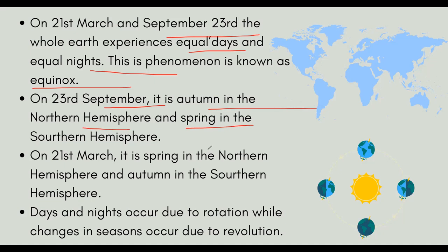If it is summer in the northern hemisphere, it will be winter in the southern hemisphere. If it is spring in the northern hemisphere, it will be autumn in the southern hemisphere. Remember, days and nights occur due to rotation, and the changes in seasons are due to revolution.